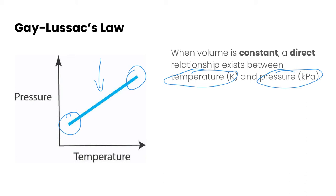We can represent this mathematical relationship by saying P1 over T1 is equal to P2 over T2. And so P1, T1, this would be initial conditions, and P2,